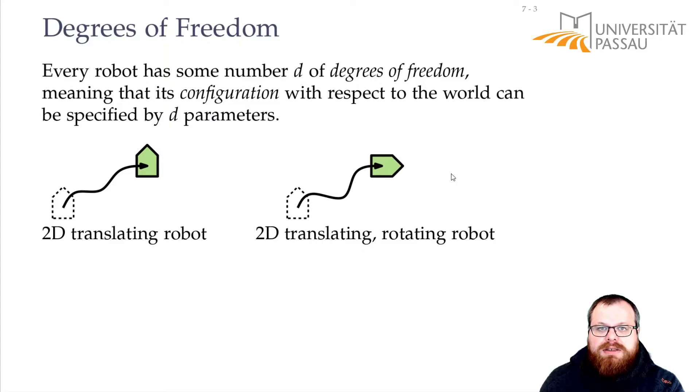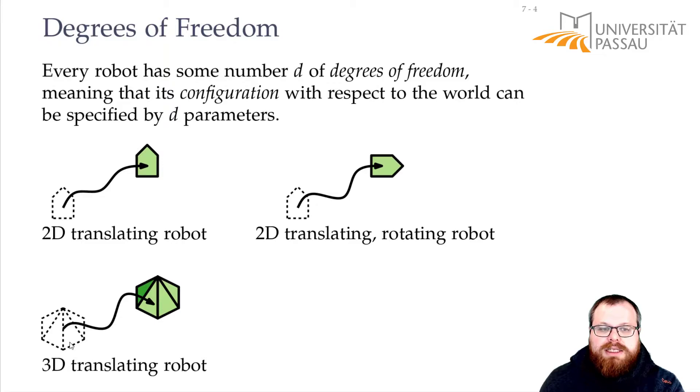The same way, if we have a three-dimensional robot that can only translate, then we have three degrees of freedom. With rotation, however, we now have five degrees of freedom.